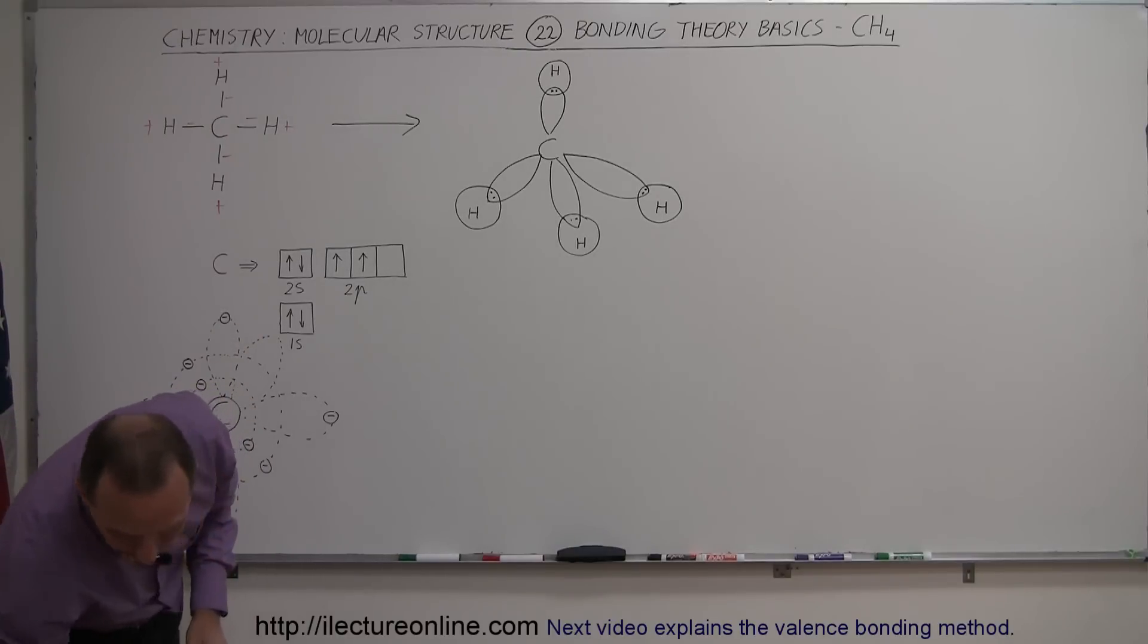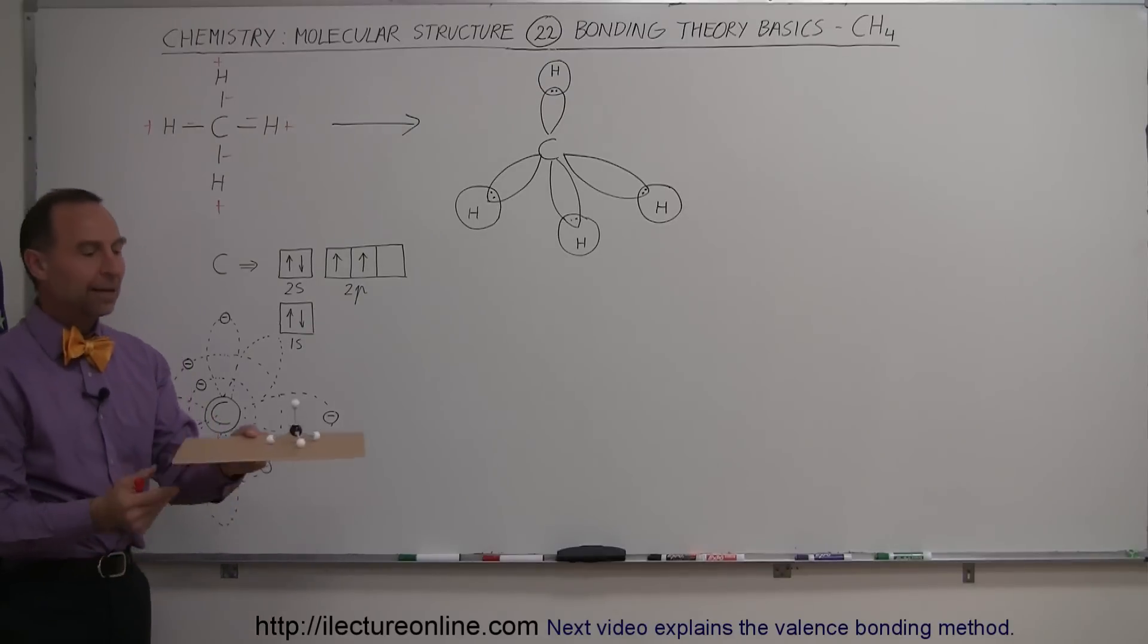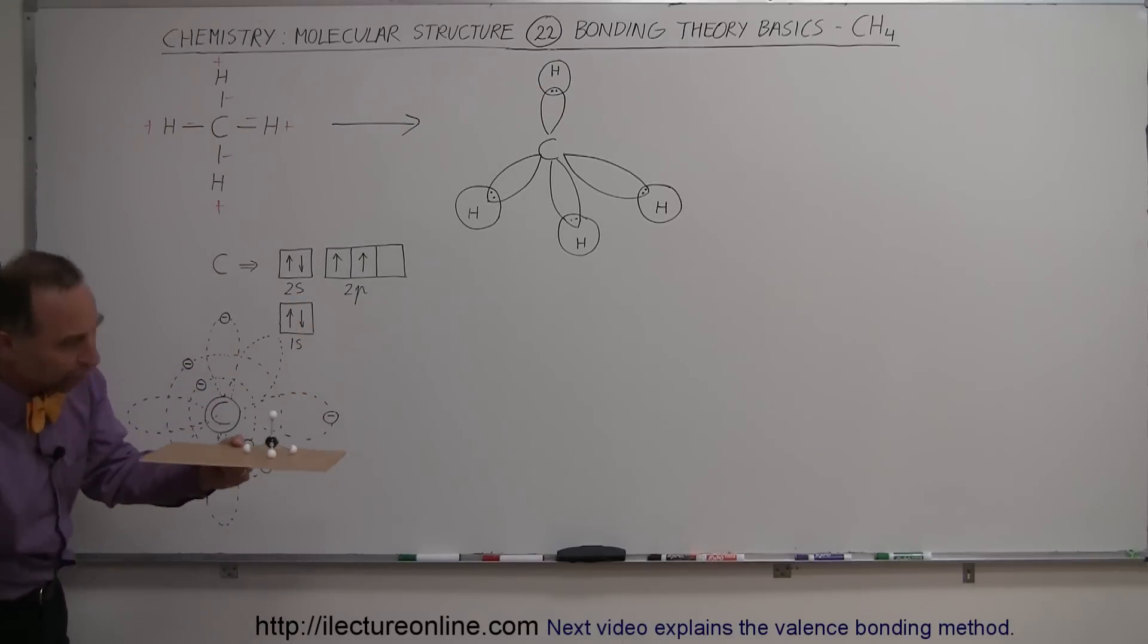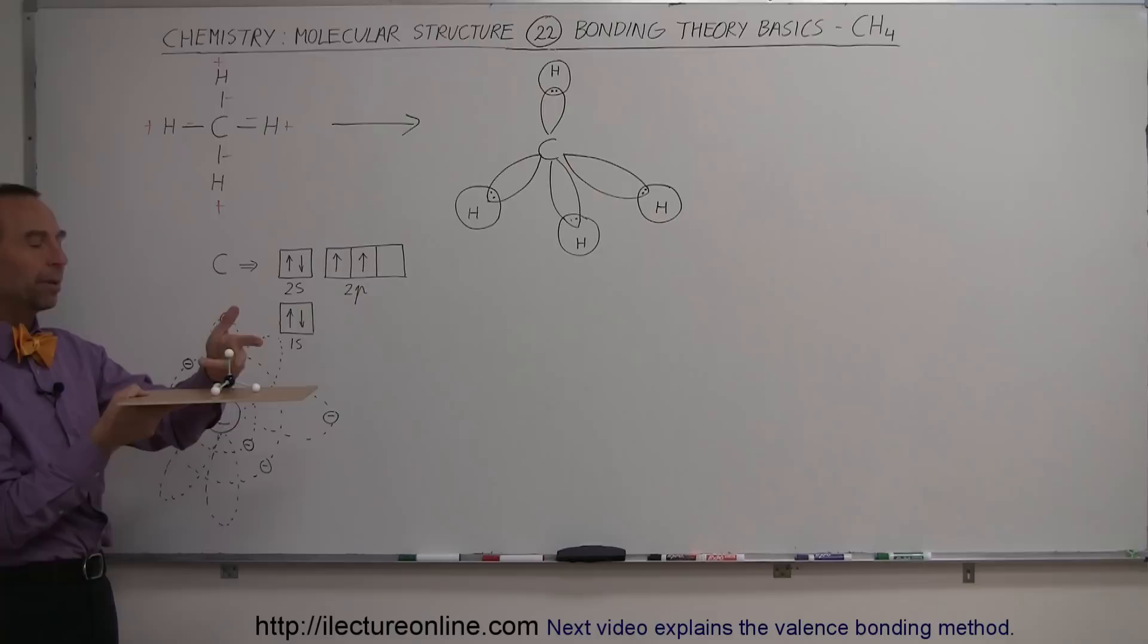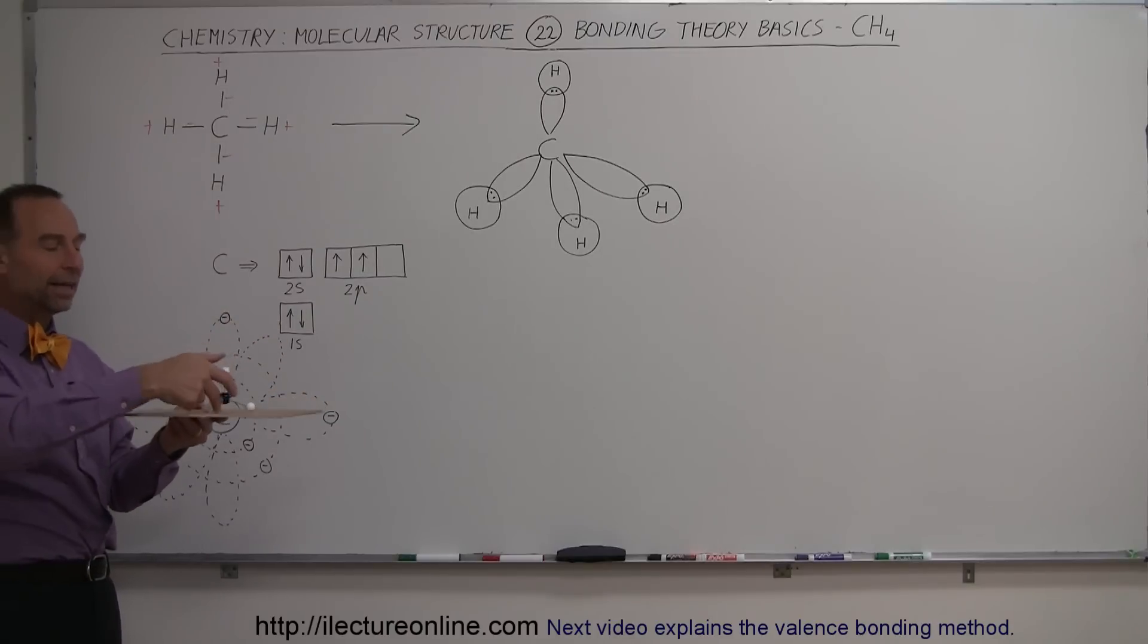What we do find out is that the methane molecule looks something like that. It looks like a tetrahedron, a tetrahedral shape. You can see that here the bond angles are as large as they can possibly be. They end up being 109.5 degrees in any direction.